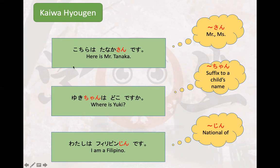Looking at examples: 'Kochira wa Tanaka-san' — 'san' does not indicate any particular gender, especially when attached to a last name. 'San' is normally used for formal conversations. 'Chan,' on the other hand, is a suffix used for children — it doesn't matter if they're a girl or a boy; 'chan' can be used for both.